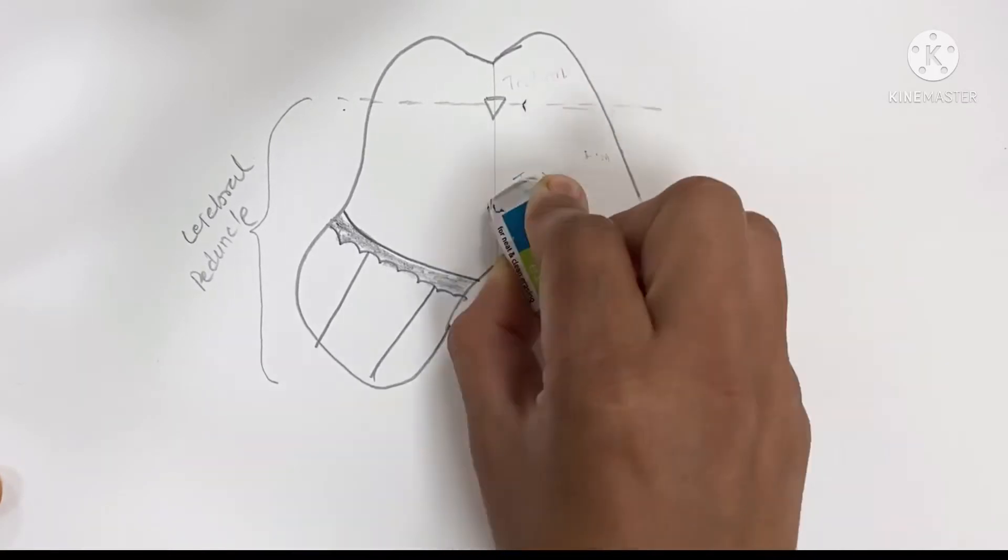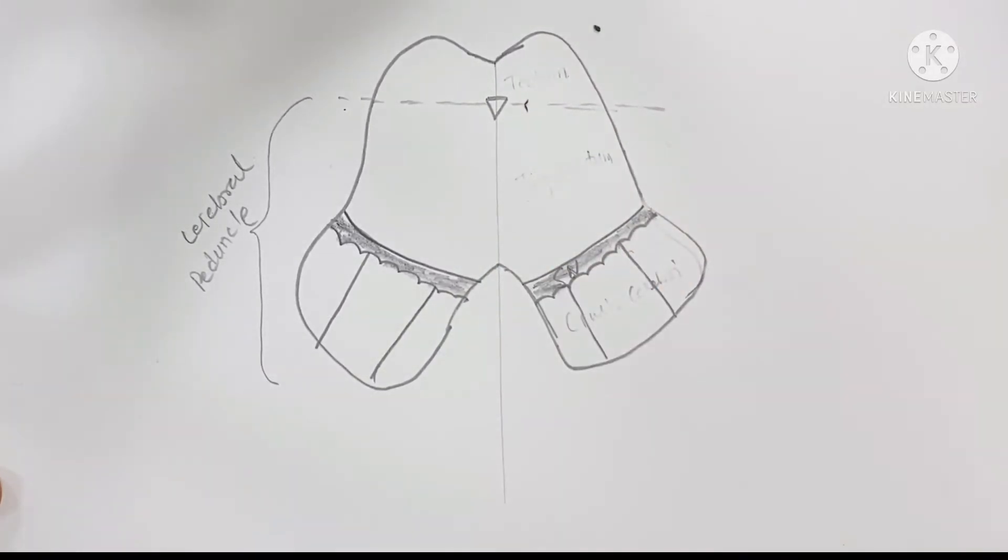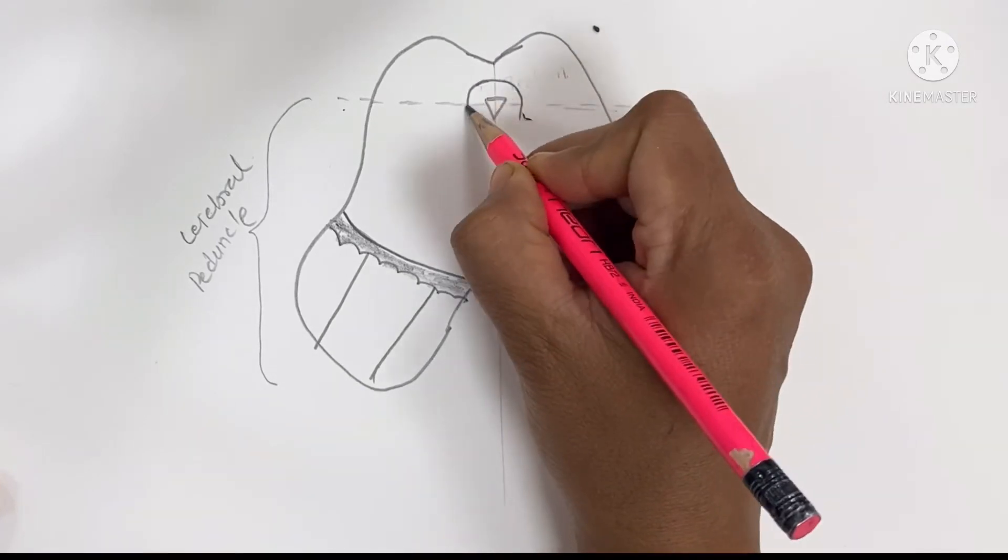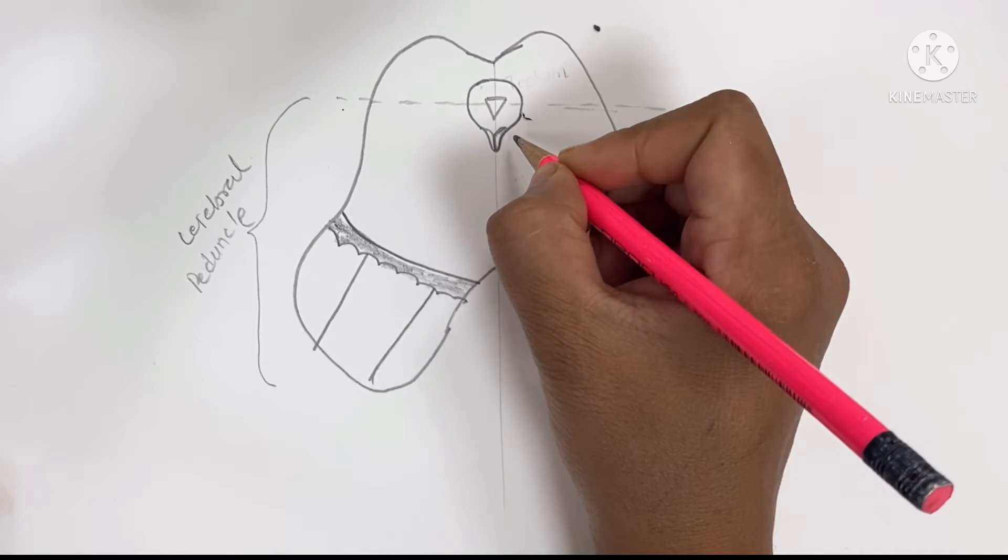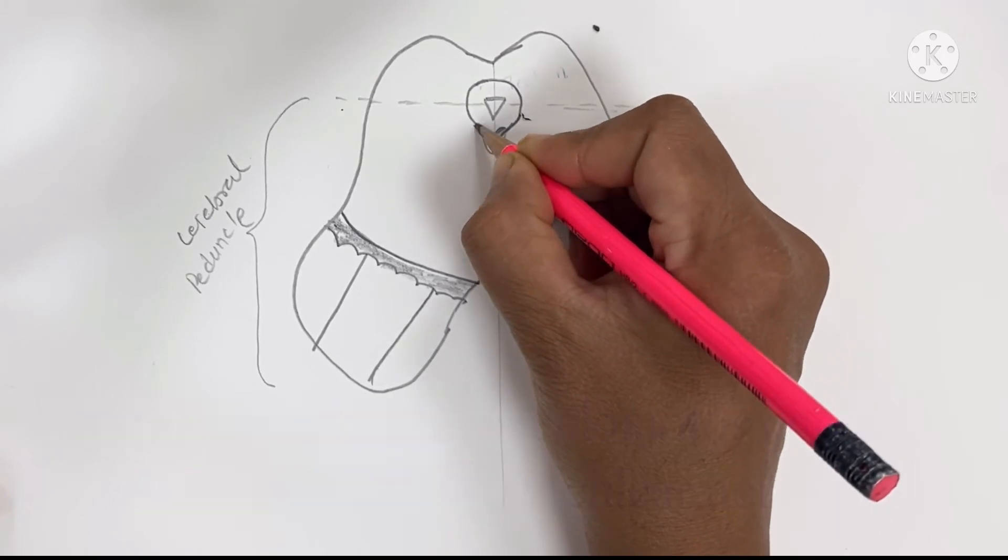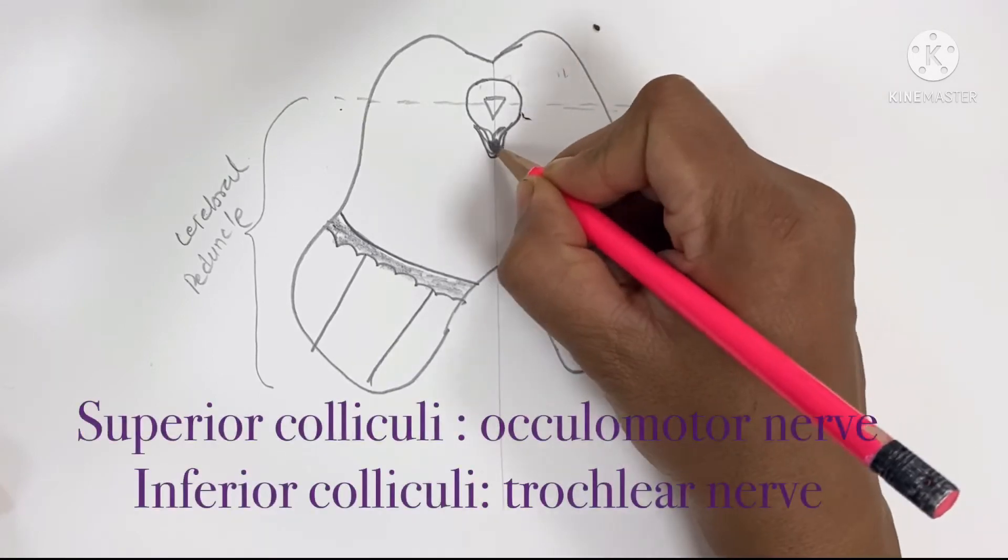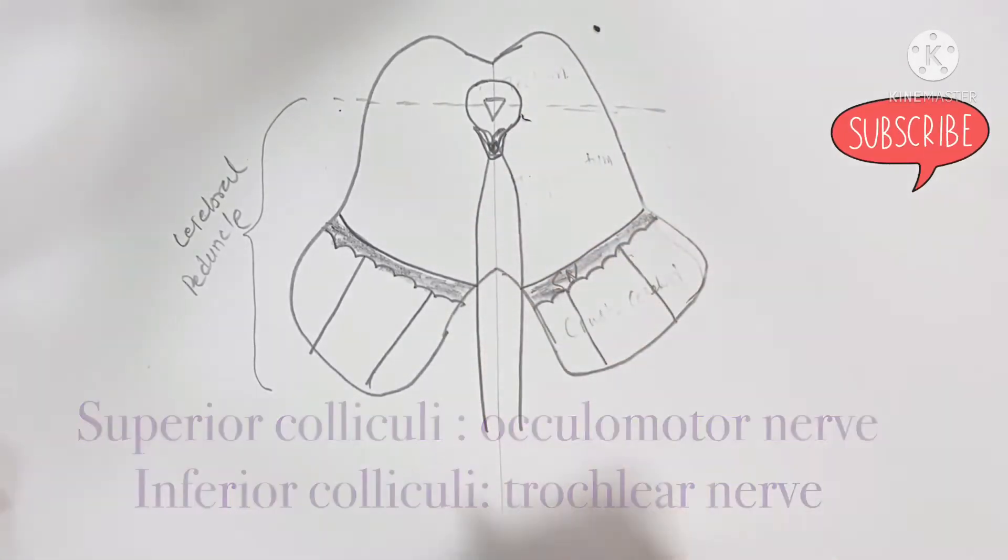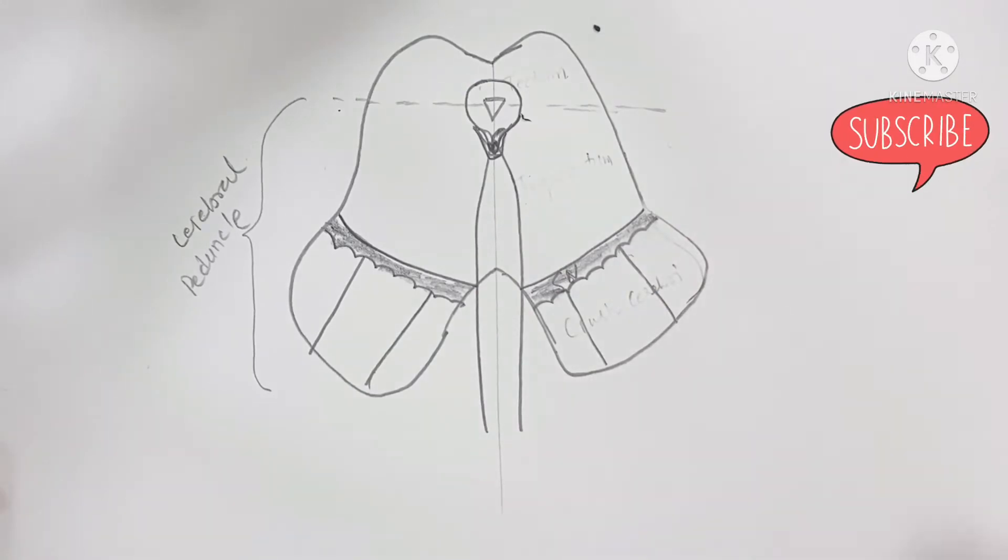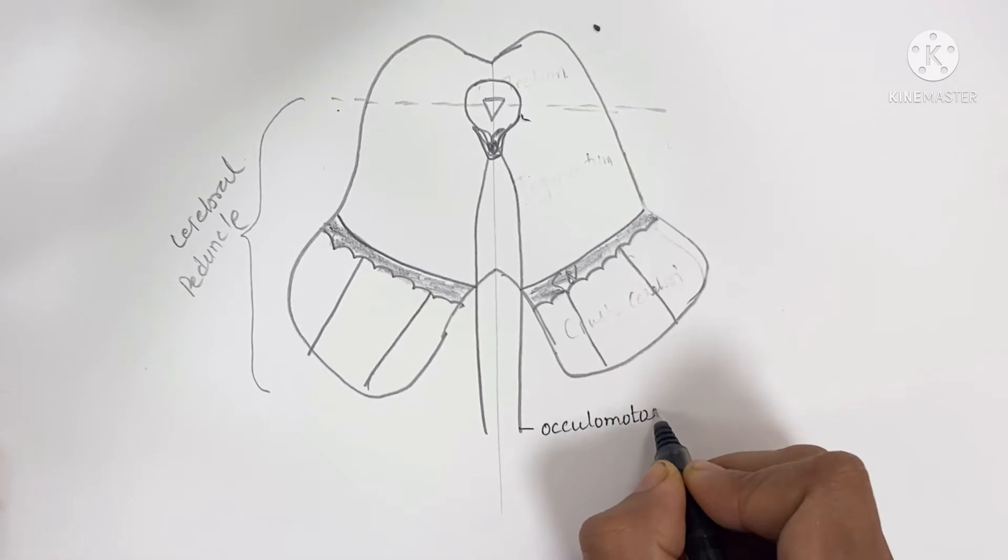Gray matter around the cerebral aqueduct contains two nuclei: the mesencephalic nucleus of the trigeminal nerve and the oculomotor nucleus. From the oculomotor nucleus, fibers go ventrally and form the oculomotor nerve.